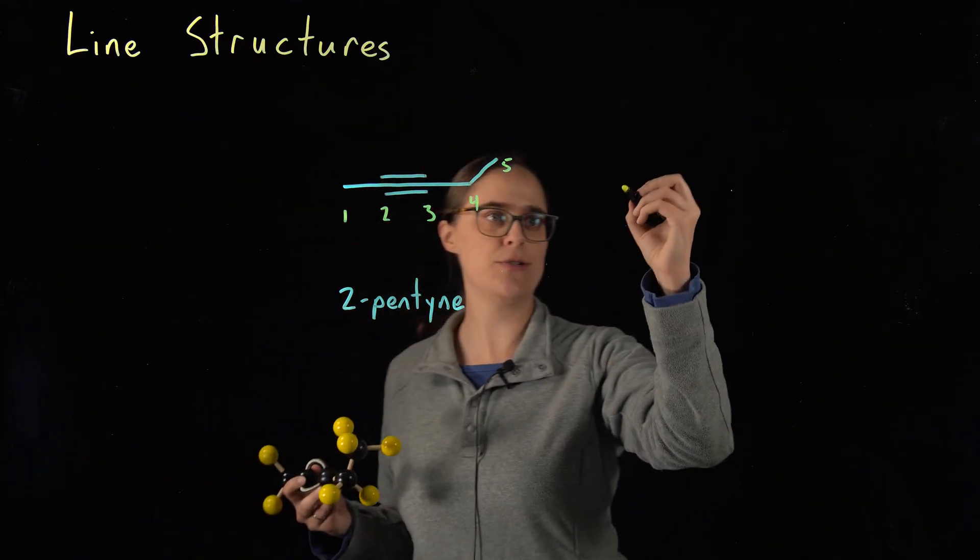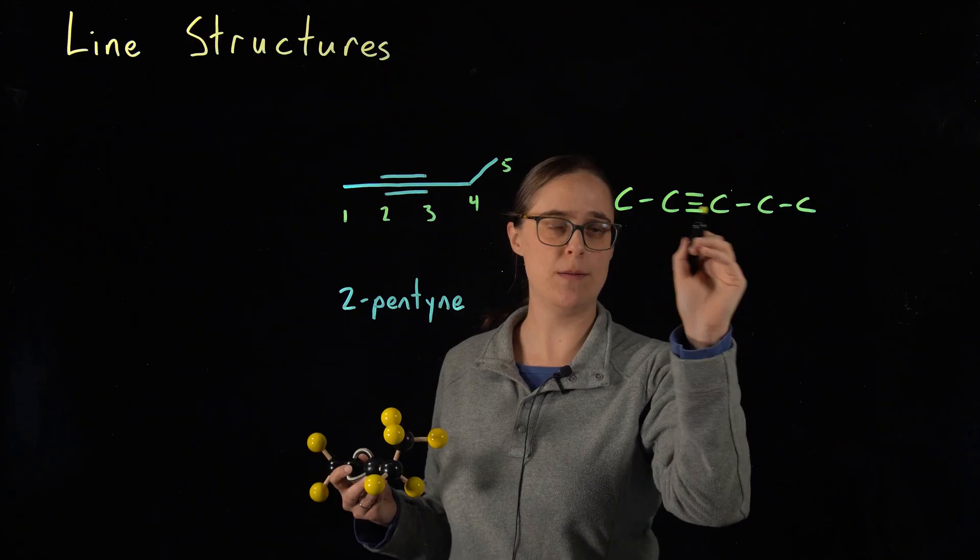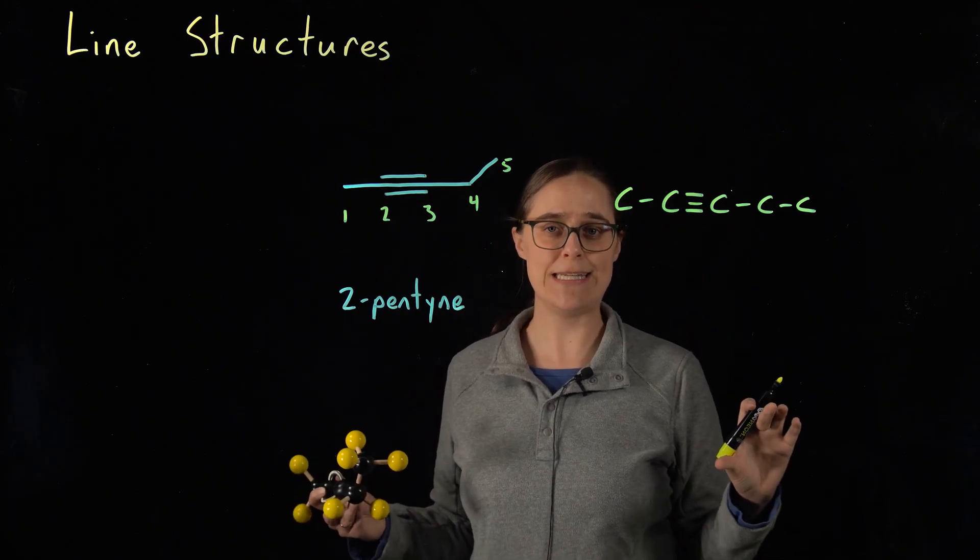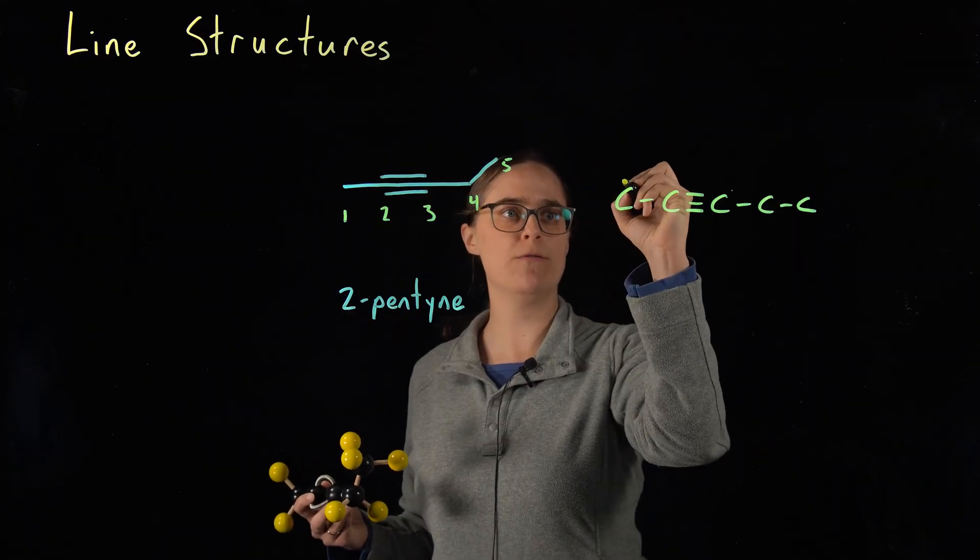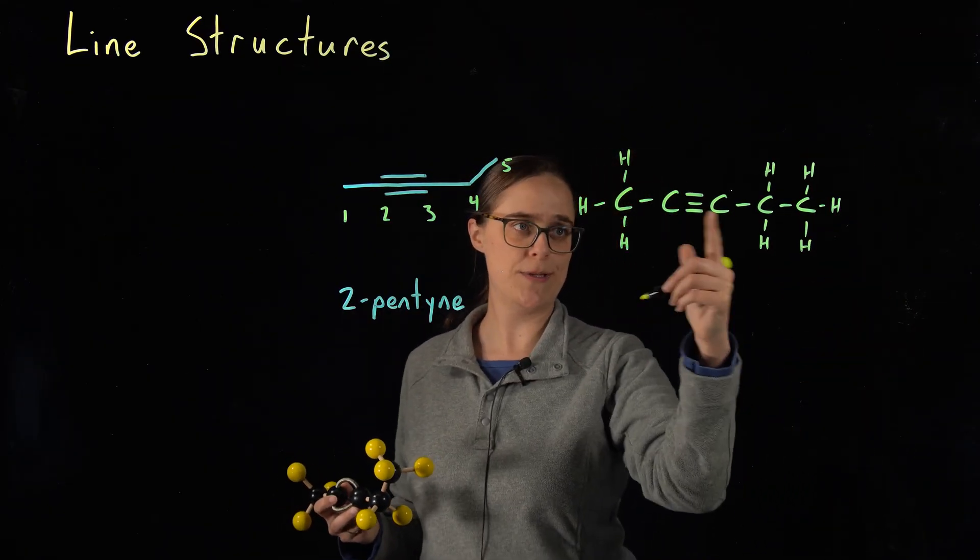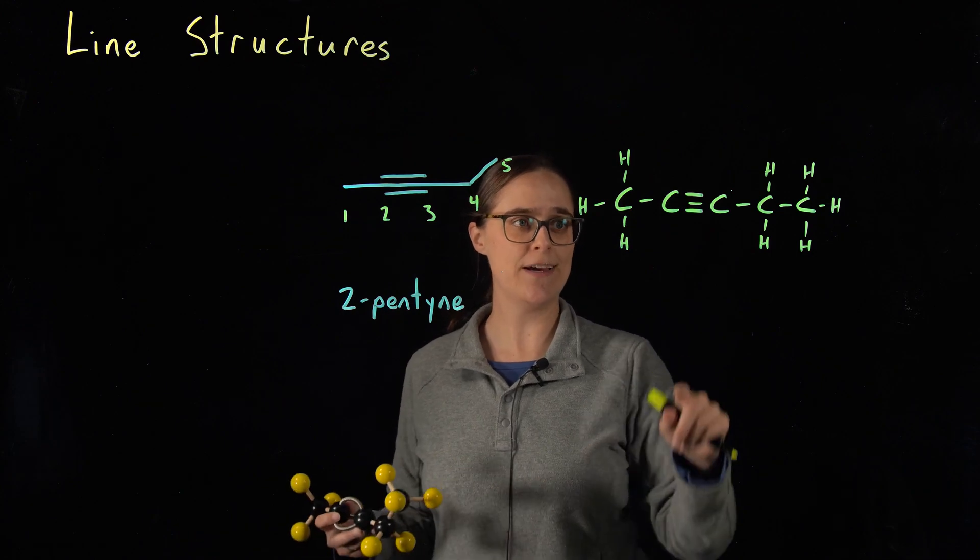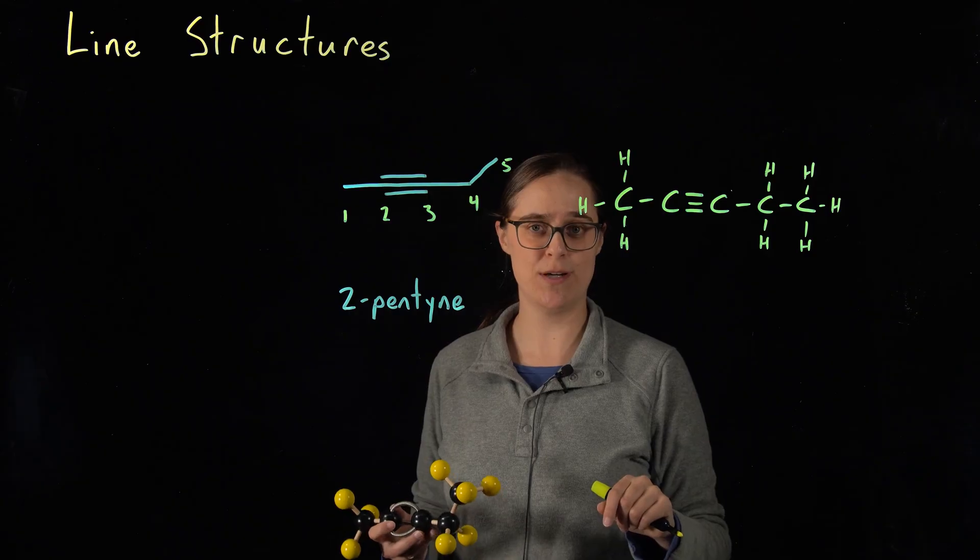Now let's draw a Lewis structure. So I have five carbons in a chain, triple bond between carbons two and three. Now I just need to add as many hydrogens as we need so that each carbon has a total of four bonds. So notice that on carbons two and three, I did not need to add any hydrogens. Four bonds were already described just by their bonds with carbons.